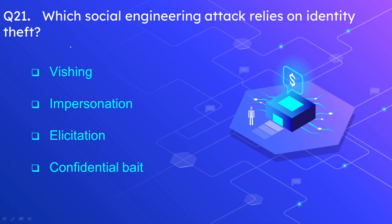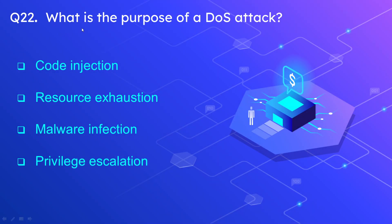Question number 21: Which social engineering attack relies on identity theft? The options are vishing, impersonation, solicitation, and confidential bait. The correct option is impersonation. Question number 22: What is the purpose of a DoS, or denial of service, attack? The options are code injection, resource exhaustion, malware infection, and privilege escalation. The correct option is resource exhaustion.